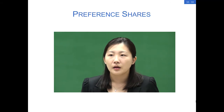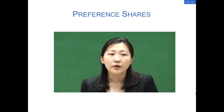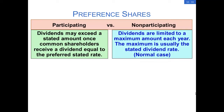To the investors, preference shares are more attractive if they can enjoy more dividends above the stated dividend rate. Some preferred stock has this feature — we call them participating preference shares. This participation feature will only apply after the ordinary shareholders receive dividends equal to the preferred stock dividend percentage. The normal case, however, is non-participating preference shares, where preference dividends are limited to a maximum amount each year, usually the stated dividend rate.